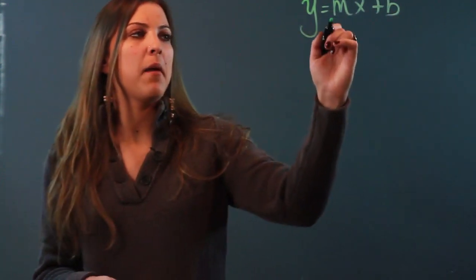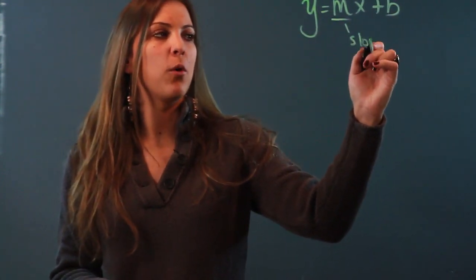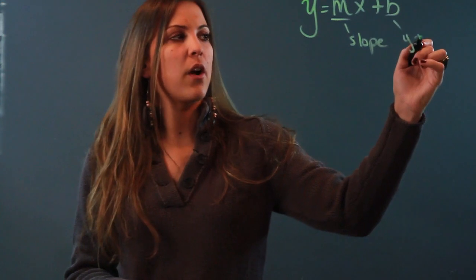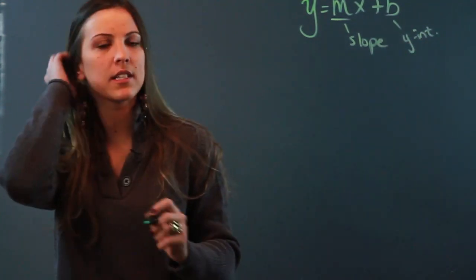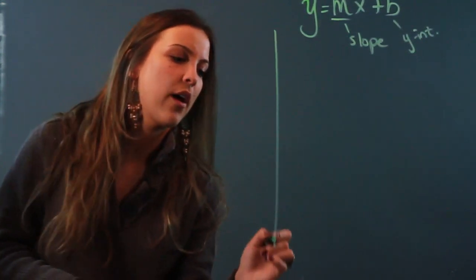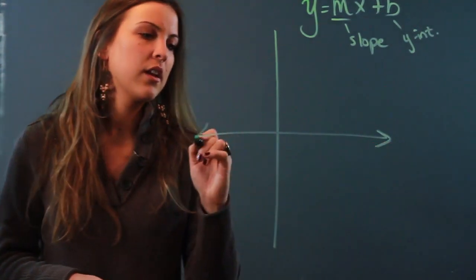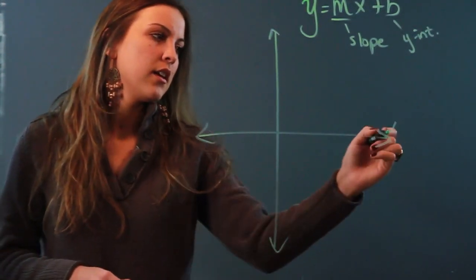really important things about it. M always stands for our slope and B always stands for our y-intercept, but it's important to see what these things look like on a graph.